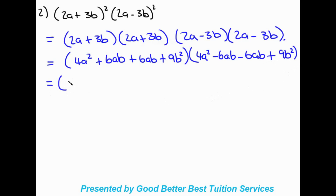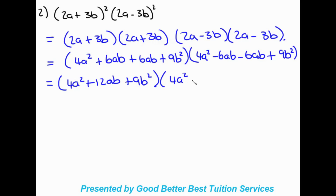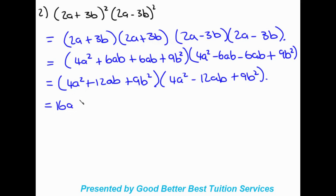Simplifying both brackets by collecting like terms: the first bracket becomes 4a squared plus 12ab plus 9b squared, and the second bracket becomes 4a squared minus 12ab plus 9b squared. Now we have a trinomial times a trinomial. Starting with the first term: 4a squared times 4a squared — adding exponents of the same base — gives 16a to the power of 4.